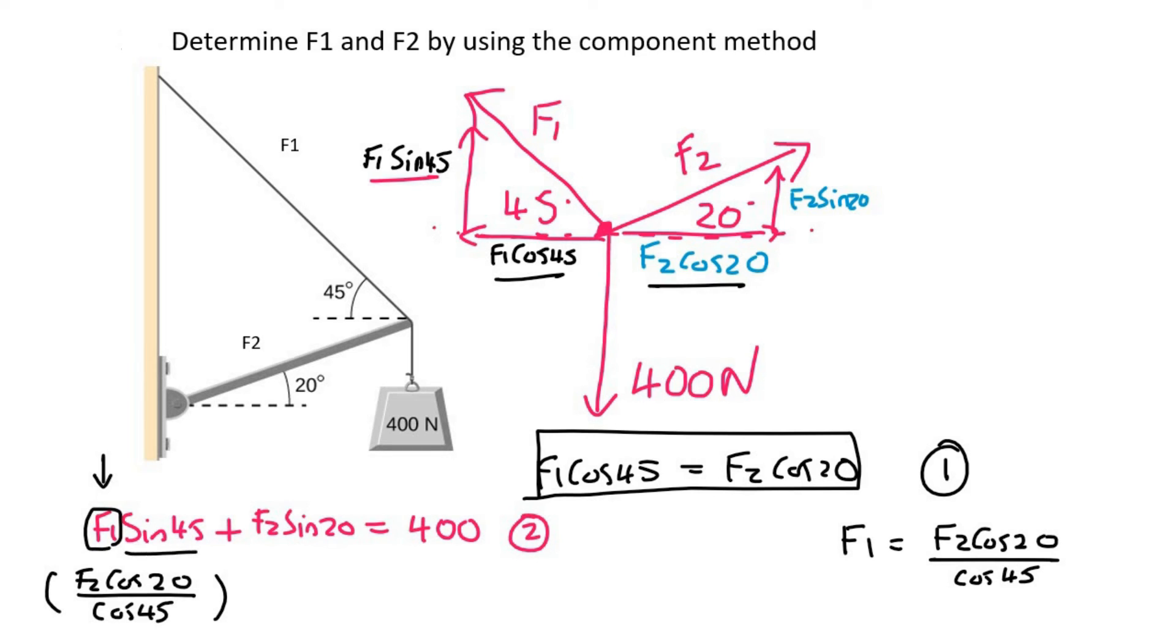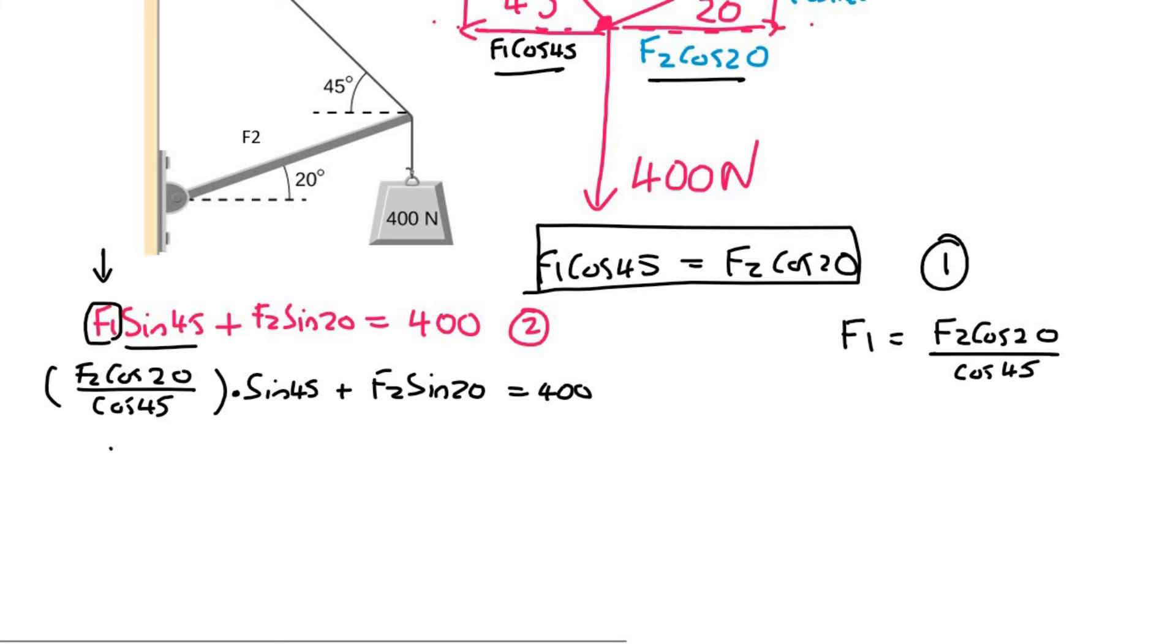So in brackets, I'm going to plug in F1 as F2 cos 20 over cos 45, and then that's only F1. So remember that there's also the sin 45 plus F2 sin 20 equals 400. Now what you can do is you can type all of this—let me do it in a different color—all of this can be typed on your calculator. It's all just one term.